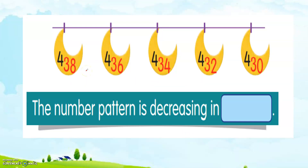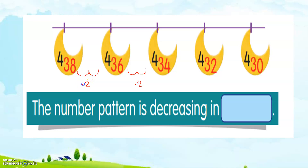There are a few moons here: 438, 436, 434, 432, and 430. The numbers are arranged in descending order. The number pattern is decreasing in — what? 438 to 436: 38, 37, 36 — there are 2 units. And then 436 to 434: 435, 434 — also 2. So the number pattern is decreasing in 2s.